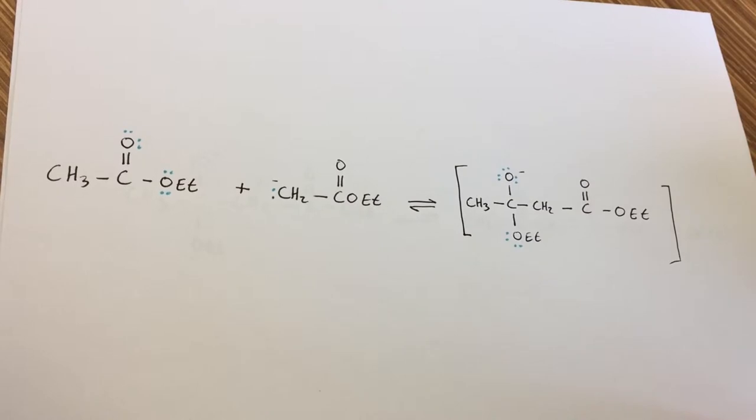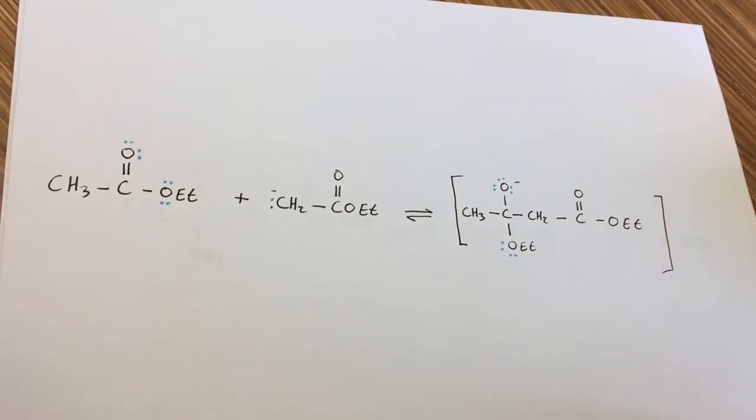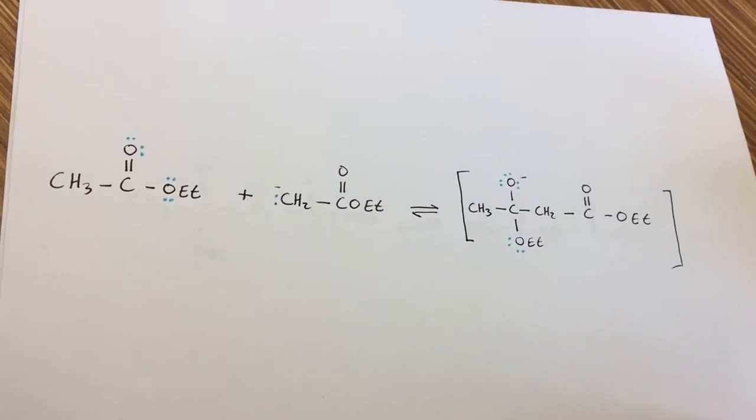Attack of the enolate anion of one ester on the carbonyl carbon of another ester gives a tetrahedral carbonyl addition intermediate.